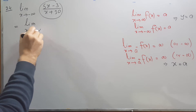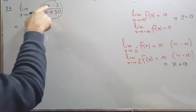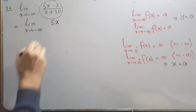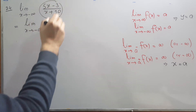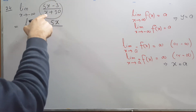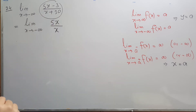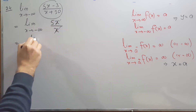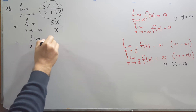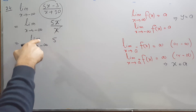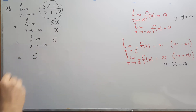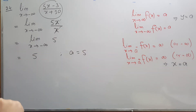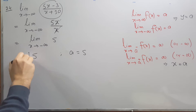For the limit as x approaches minus infinity of (5x - 3)/(x + 10): the highest power term in the numerator is 5x and we remove the 3; in the denominator the highest power term is x and we remove the 10. Then x cancels with x, leaving 5. So the limiting value as x approaches minus infinity is 5.